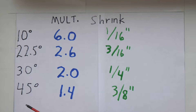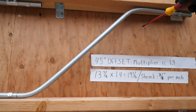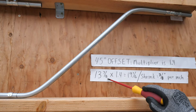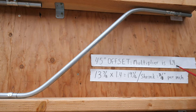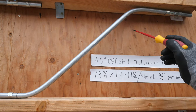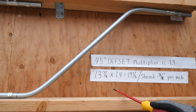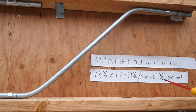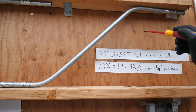The next angle is 45 degrees — the multiplier is 1.4 and the shrinkage is 3/8 of an inch. Here's an example of a 45-degree offset. The distance from here to here is 13 and 7/8 inches. You take that distance and multiply it by 1.4, which gives you 19 and 7/16 inches — that's the distance between the marks where you make your 45-degree bends. The shrinkage is 3/8 of an inch per inch, so you multiply 13 and 7/8 times 3/8 to get the total shrinkage.